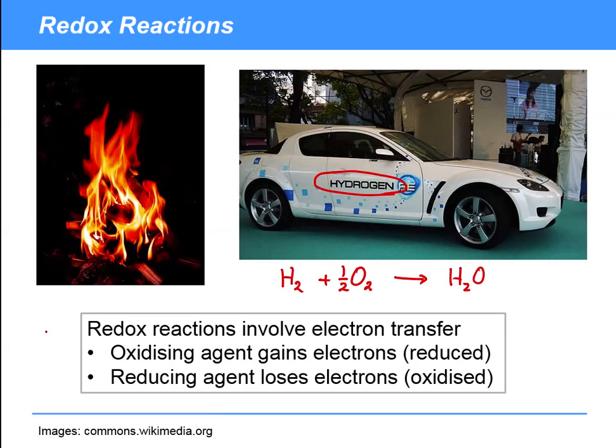So redox reactions in general are those which involve electron transfer. You have something called an oxidizing agent, which gains some electrons, and we call that process its reduction, or the fact that that compound is reduced. We then say that reducing agents lose electrons and they become oxidized.